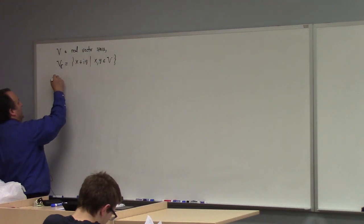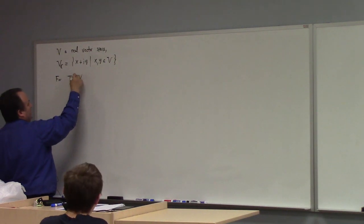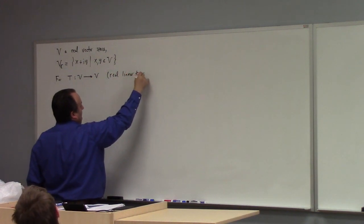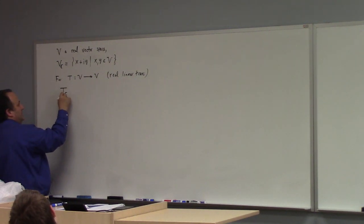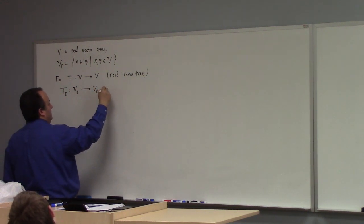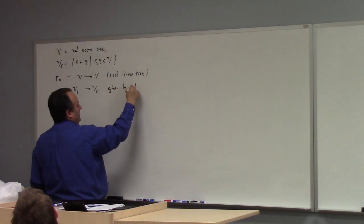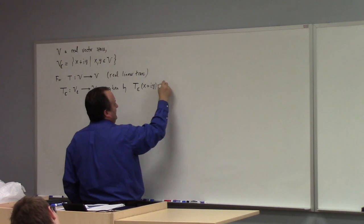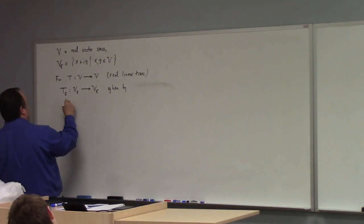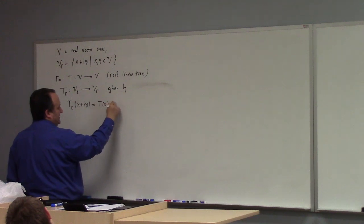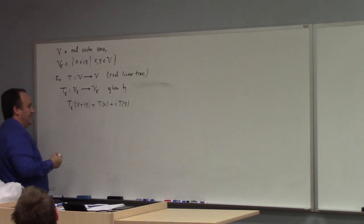We also defined, for T a real linear transformation from V to V, the complexification T sub C to be a mapping from V sub C to V sub C, given by T sub C of x plus iy equals T of x plus i times T of y. That's how we defined the complexification of T.